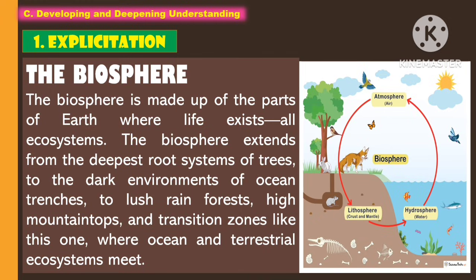Another earth system is the biosphere. The biosphere is made up of parts of earth where life exists — that is, all ecosystems. The biosphere extends from the deepest root systems of trees to the dark environments of ocean trenches, to lush rainforests, high mountain tops, and transition zones where ocean and terrestrial ecosystems meet.